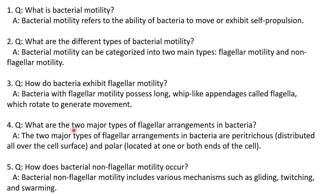What are the two major types of flagellar arrangements in bacteria? The two main types predominantly observed are peritrichous, where flagella are present all over the surface of the cell, and polar, where one or many flagella are present at either one end or both ends of the cell.